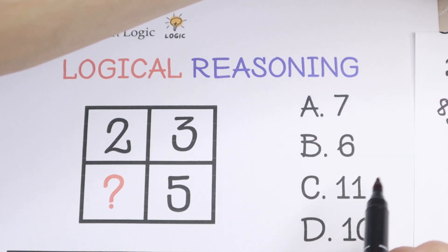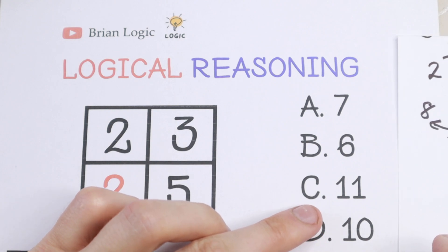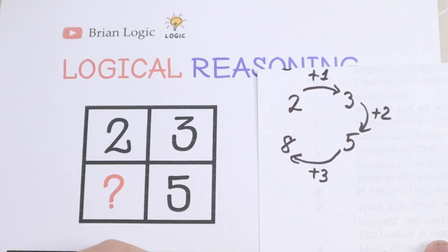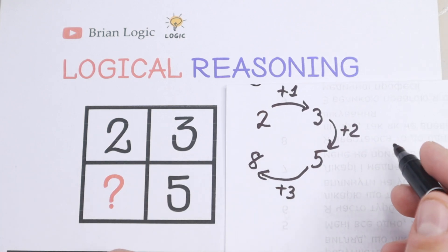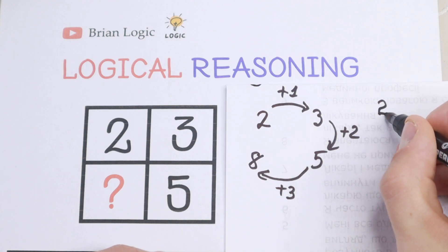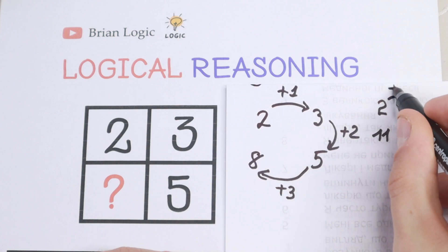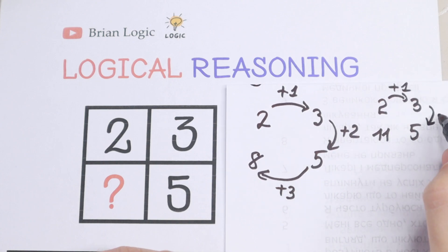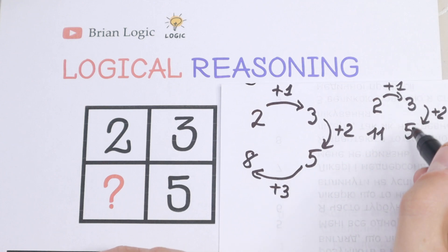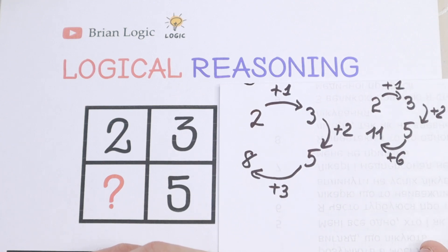And moreover I don't see any solution if answer will be like for example 11 because there is no way the last number will be 11. So take a look for example we have 2, 3 and 5 and right here 11. So I don't see any pattern between these numbers. Because right here we add 1, right here we add 2 and right here we add 6. So as for me there is no pattern between these numbers 1, 2 and 6. So we reject this 11 as well.